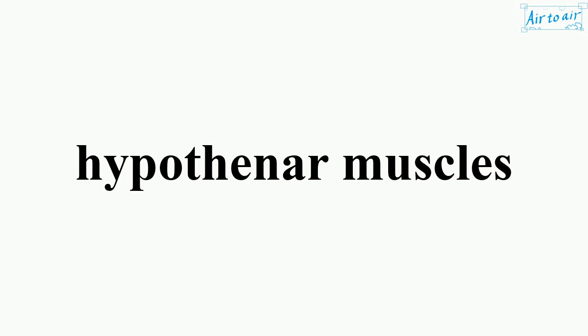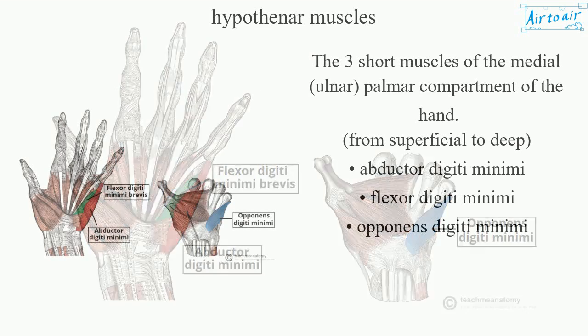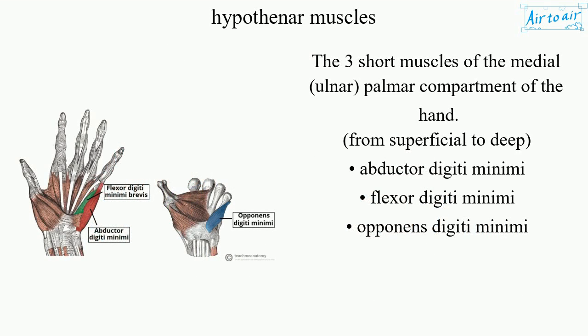Hypothenar Muscles: the three short muscles of the medial, ulnar, palmar compartment of the hand. From superficial to deep: abductor digiti minimi, flexor digiti minimi, opponens digiti minimi.